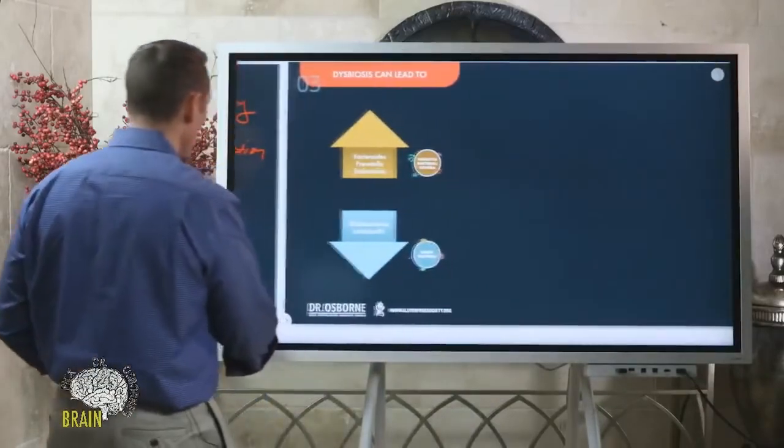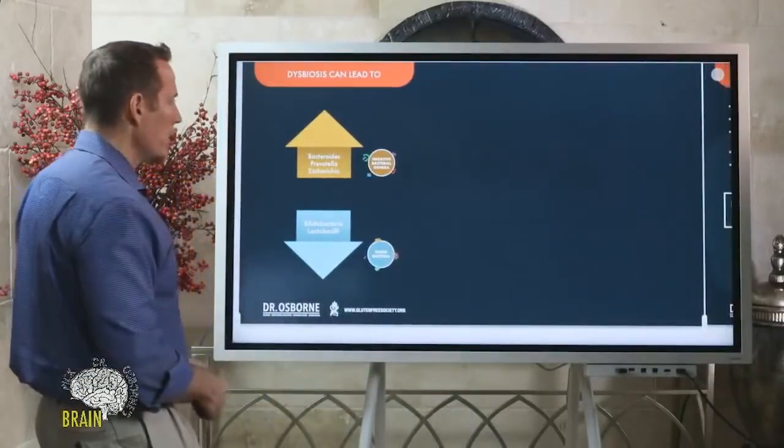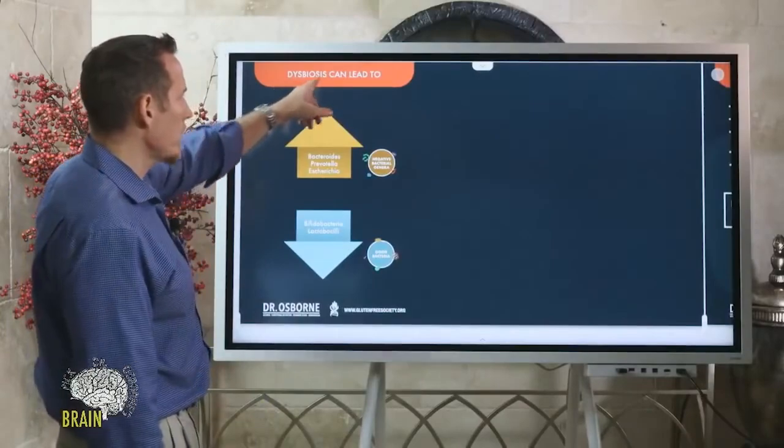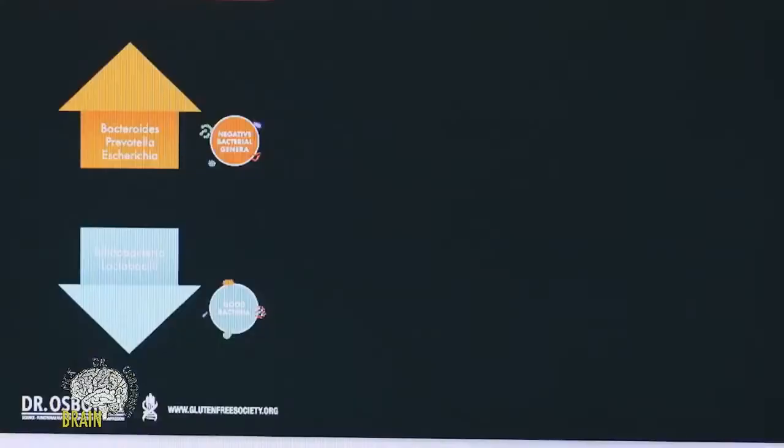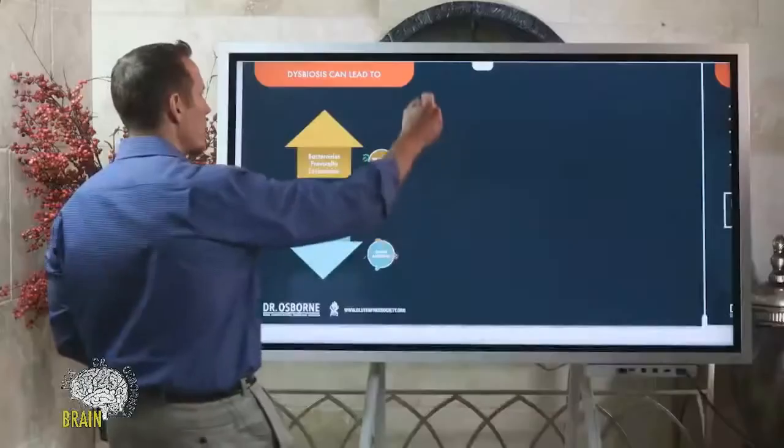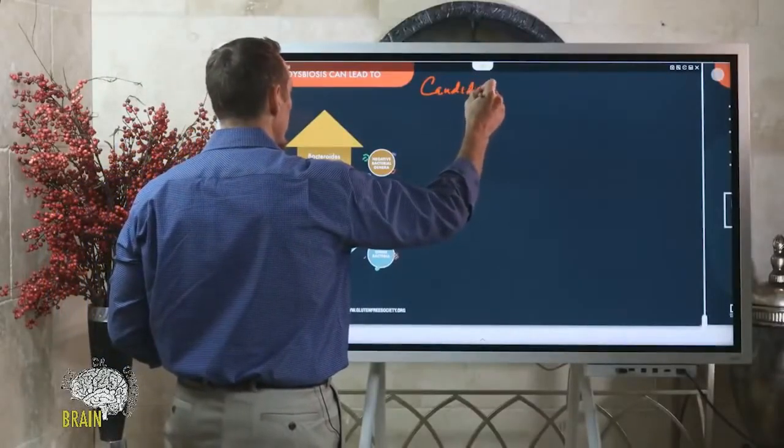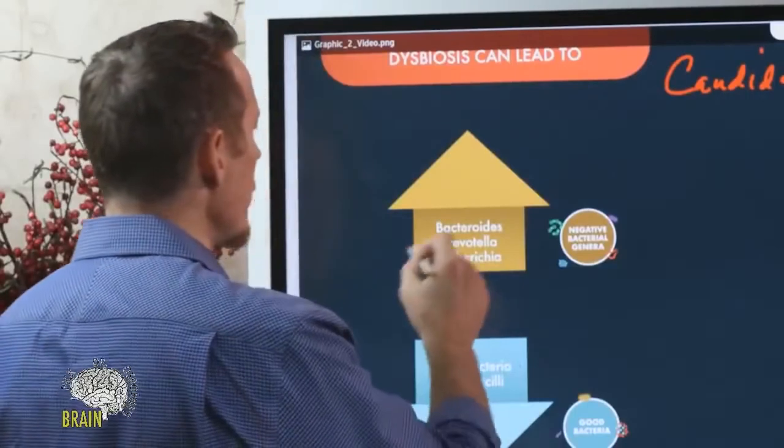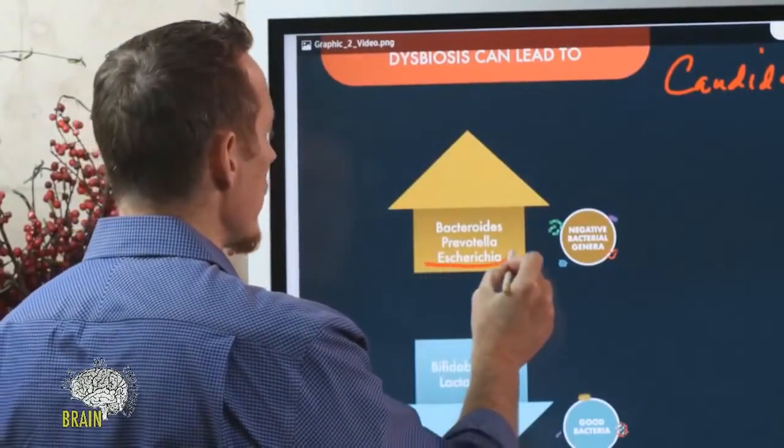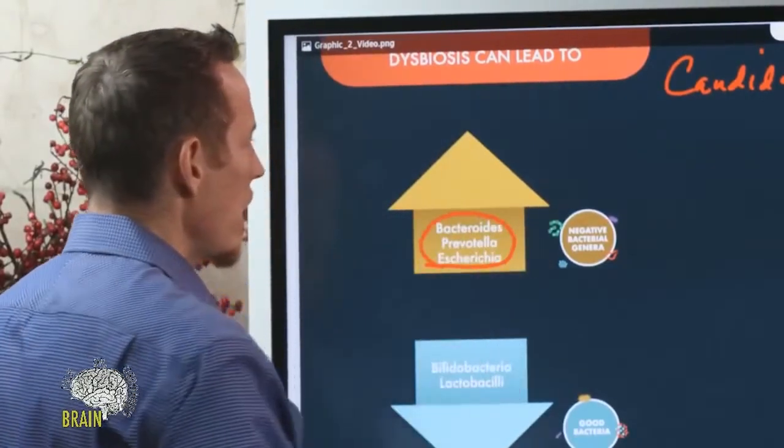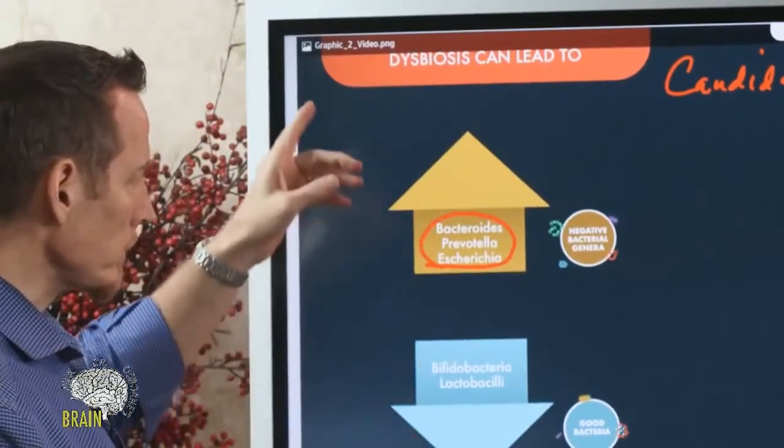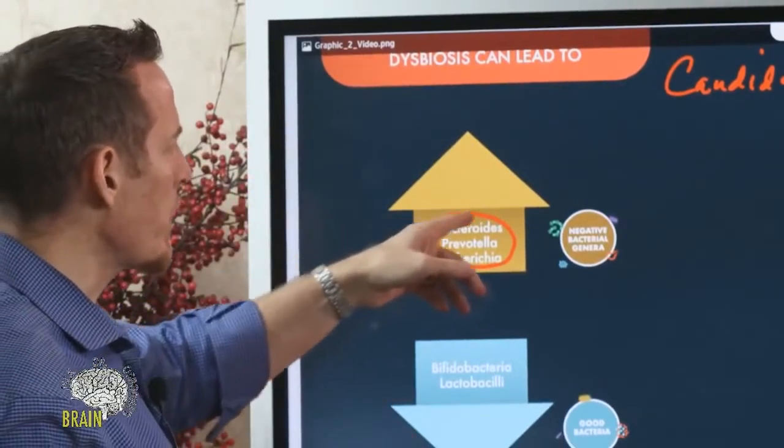Next, I want to talk a little bit about that dysbiosis again. I said that antibiotics can lead to dysbiosis, and one of the forms of dysbiosis is candida, as I mentioned. But it can also lead to an elevation in these strains of bacteria.